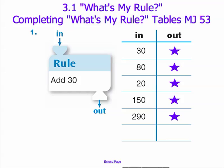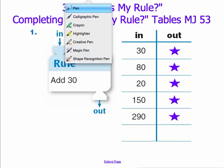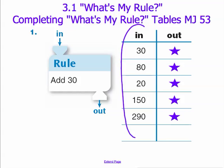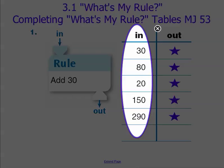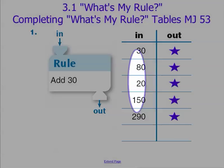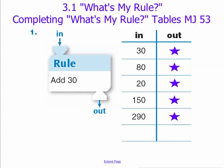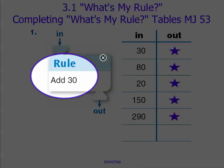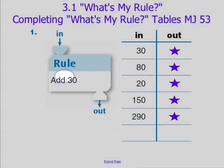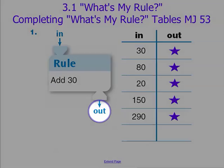The first step to solving these types of problems is to take a look first at our inputs. These values we place into our function machine and a rule will be applied to them. That rule will change our inputs and give us finally an output.